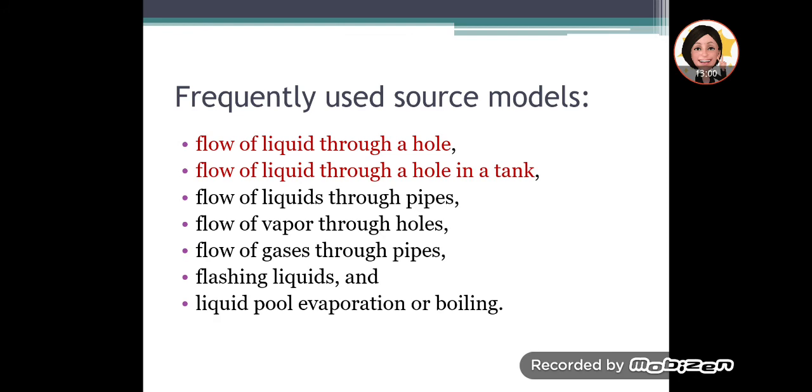The frequently used source models are flow of liquid through a hole, meaning through a hole on a flat surface with no potential energy. Or it can be in a tank or through flow of liquids through the pipes. And then flow of vapor through holes, flow of gases through pipes, flashing liquids, and liquid pool evaporation or boiling. These are the frequently used source models. These are the frequently happening incidents in the industry as well. For our lecture today, we will look into the first two source models.